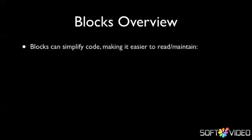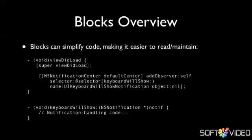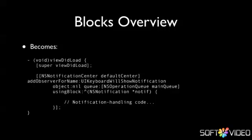If we look at another example of block usage, we'll see a rather traditional approach to a notification handler. We have an object adding itself as an observer — this code may typically appear in our view controller class — adding an observer for the UIKeyboardWillShow notification and triggering a selector to be executed when that notification is received. We have a separate selector with the notification handling code within it. If we change that to replace it with block code, we'll see the code is much simpler and shorter. We are still adding an observer for the UIKeyboardWillShow notification, then using the using-block method to define our notification handling code as a block — effectively as an anonymous function to handle the return of that notification.